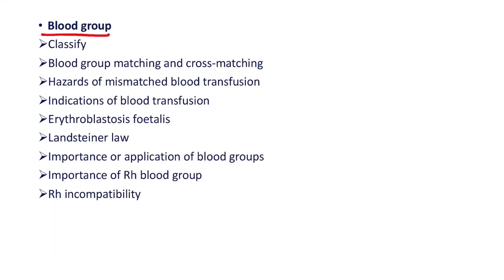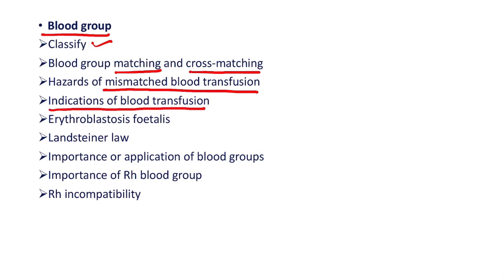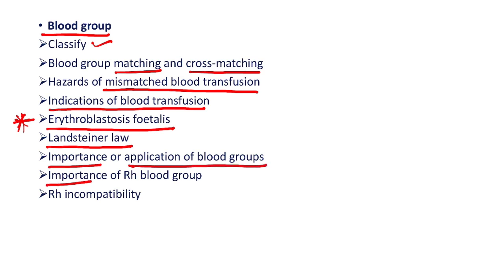The next topic is blood group. Here, classification of blood groups, what is blood group matching and cross-matching, hazards of mismatched blood transfusion, indications of blood transfusion, add a note on erythroblastosis fetalis, what is Landsteiner's law, importance and application of blood groups, importance of Rh blood group, and what is Rh incompatibility — these are the sub-questions related to blood group.